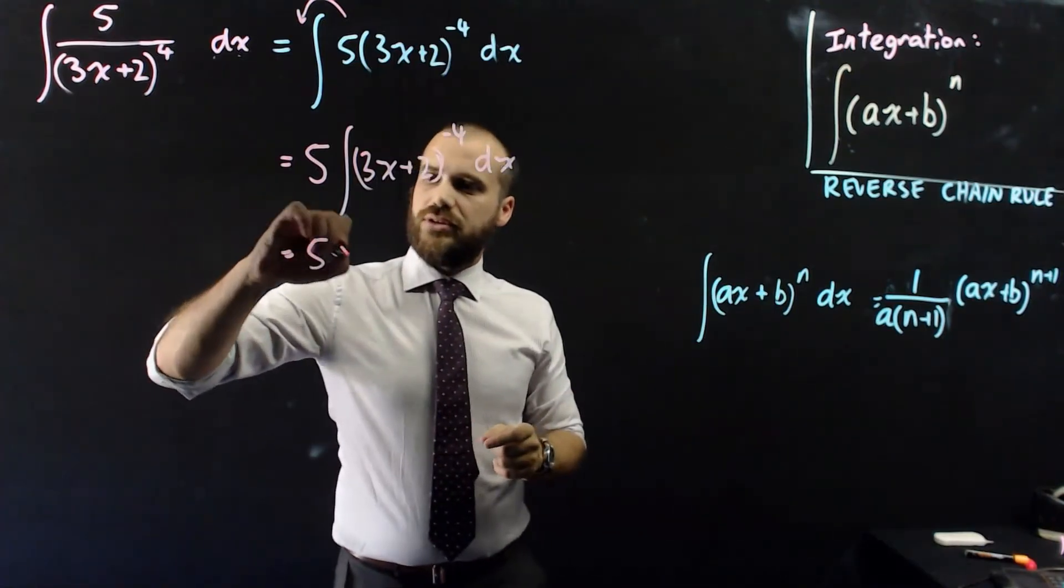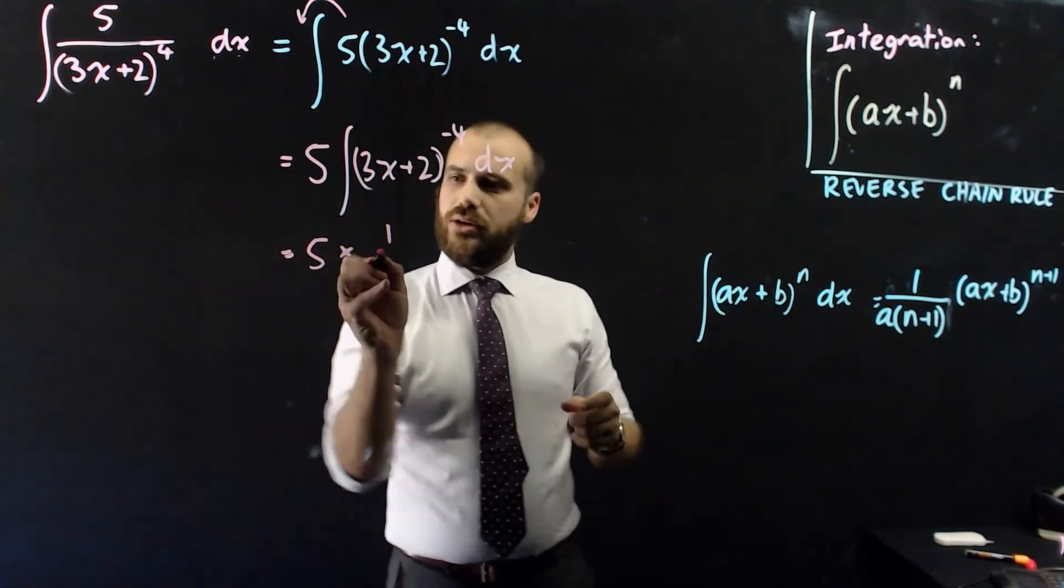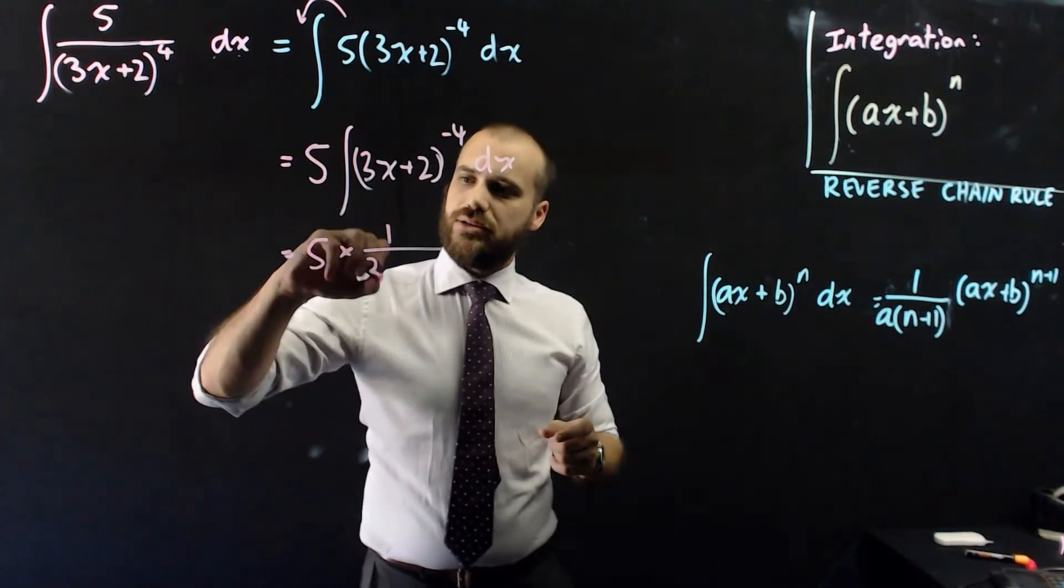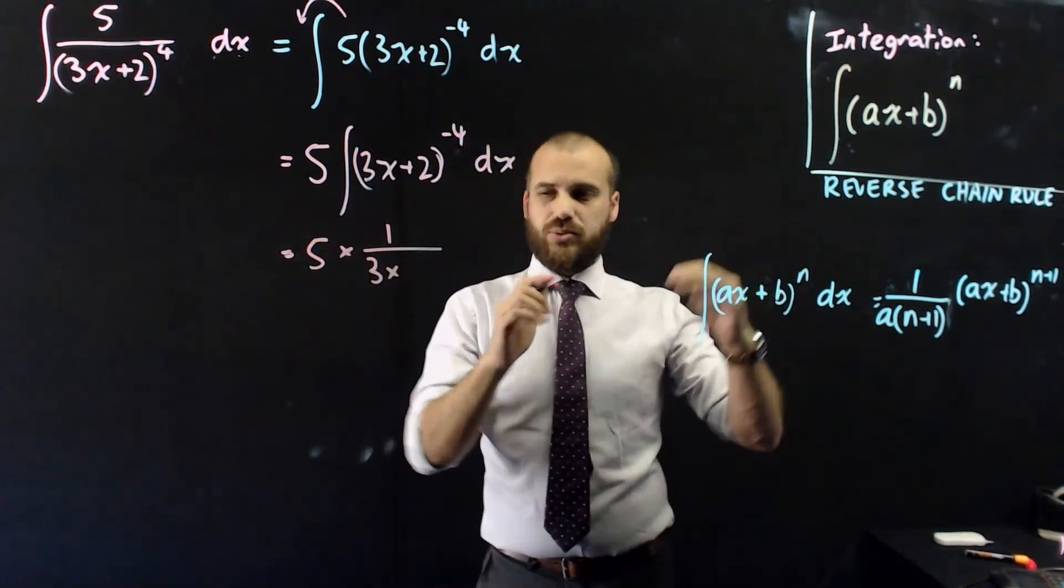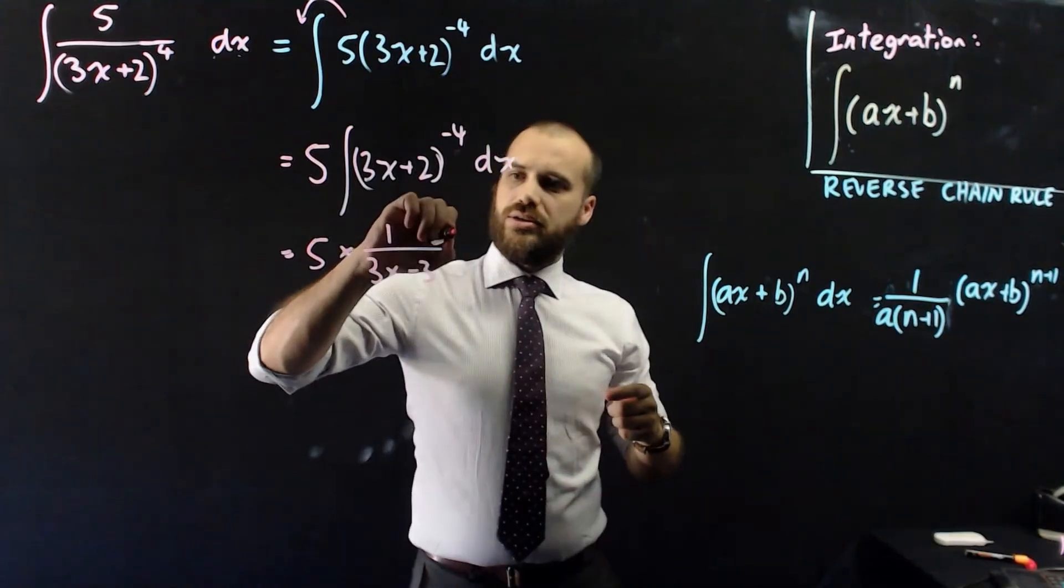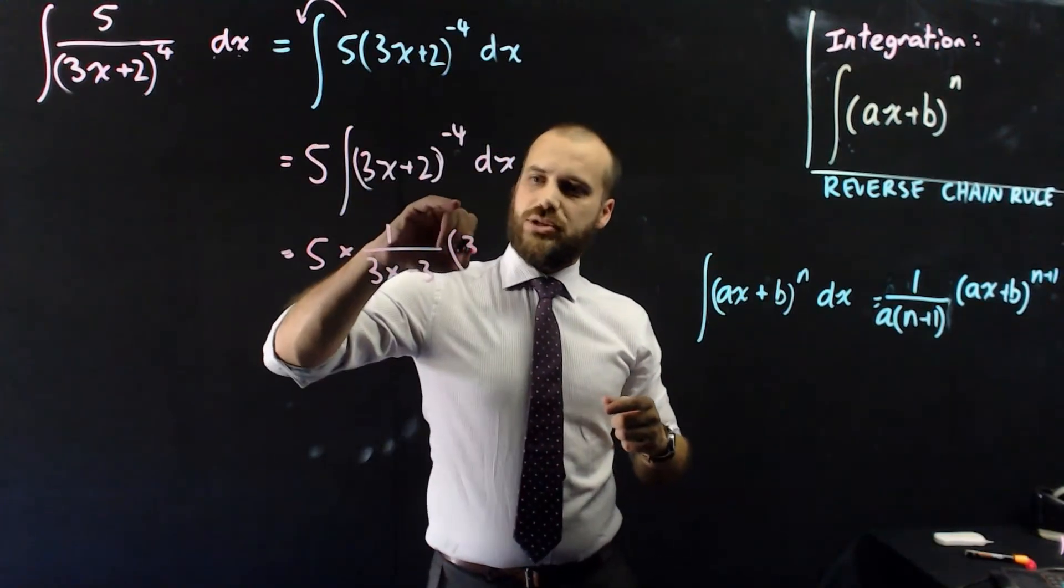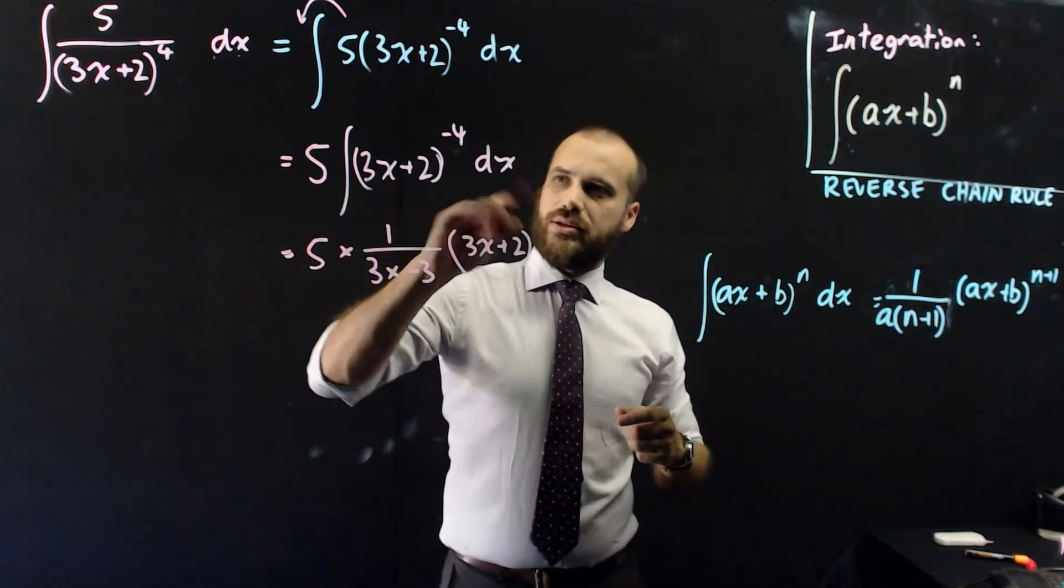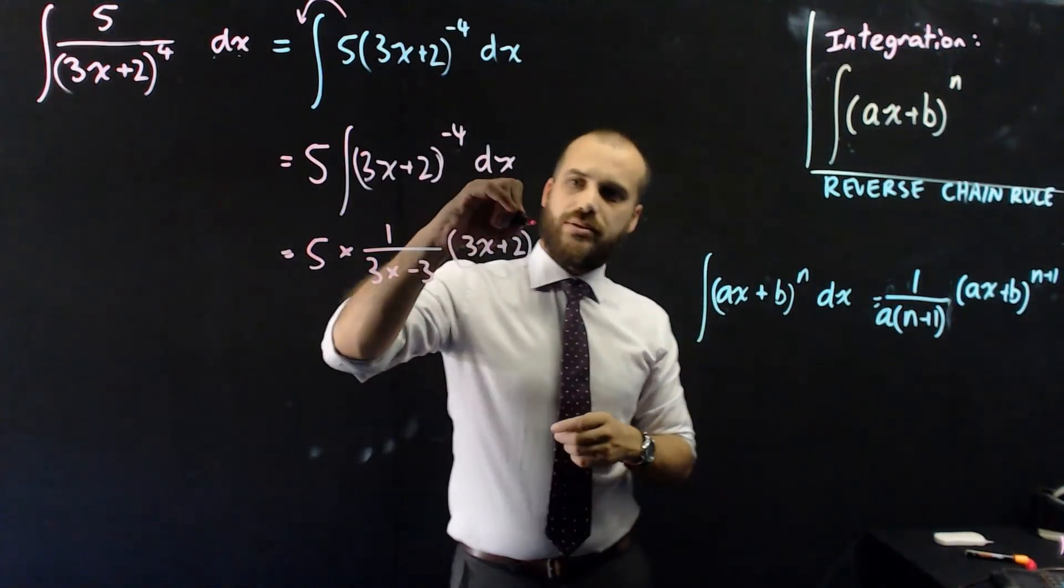So now that's going to be 5 times 1 over a times to the power of negative 4 plus 1, which is negative 3, times 3x plus 2 to the power of negative 4 plus 1, negative 3.